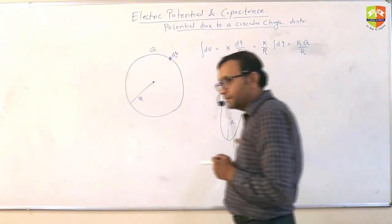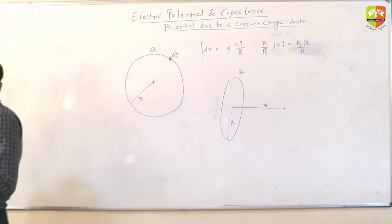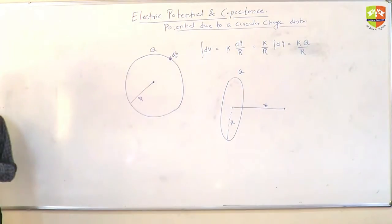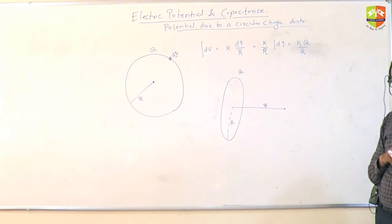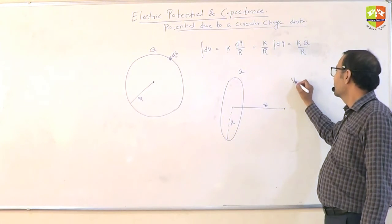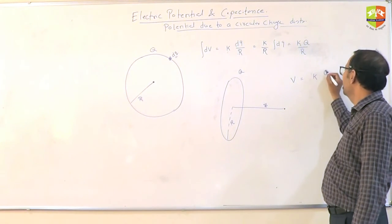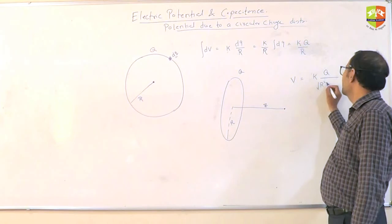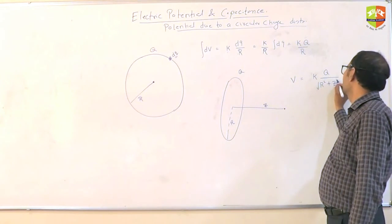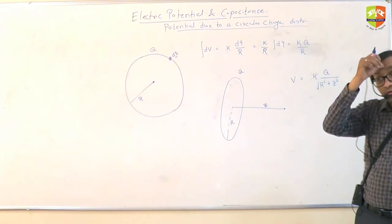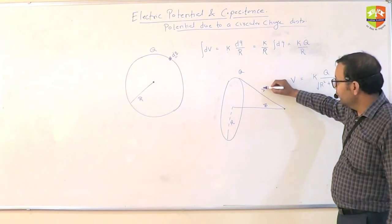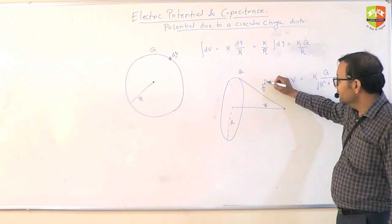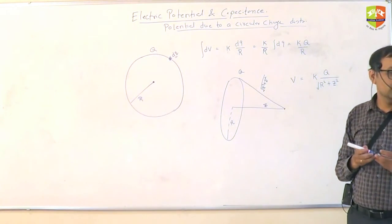For the charge at a fixed distance or not? Yes. What is the answer? K, K, Q by root of r square plus z square. V is equal, K Q divided by root over r square plus z square. And now, all the charges are at a distance of root over r squared plus z squared only. Okay?